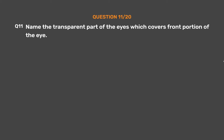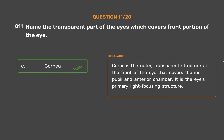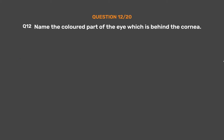Question number 11: Name the transparent part of the eye which covers the front portion of the eye. Option A: Iris. Option B: Pupil. Option C: Cornea. Option D: None of these. The correct answer is Option C, Cornea. The cornea is the outer transparent structure at the front of the eye that covers the iris, pupil, and anterior chamber. It is the eye's primary light-focusing structure.